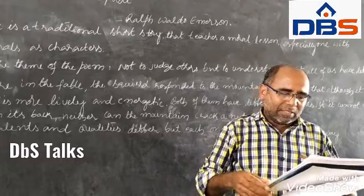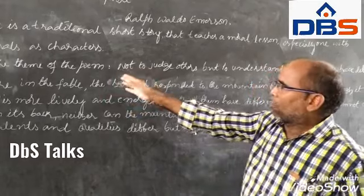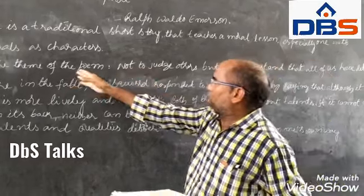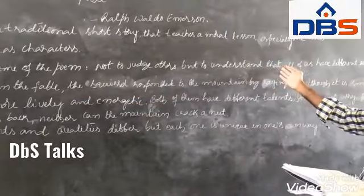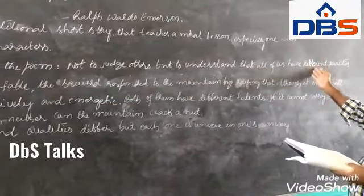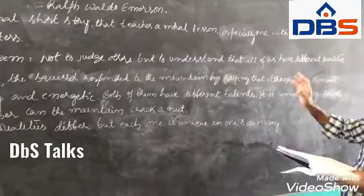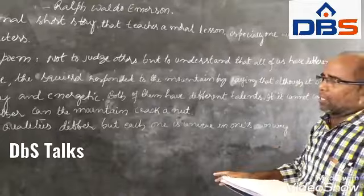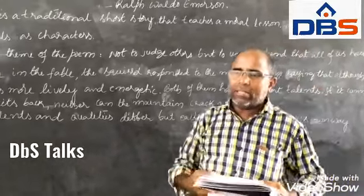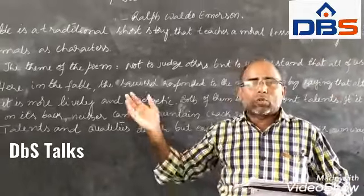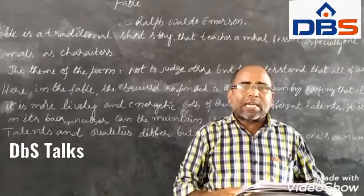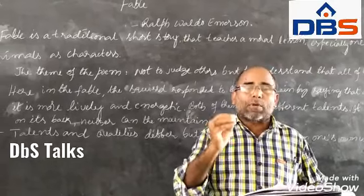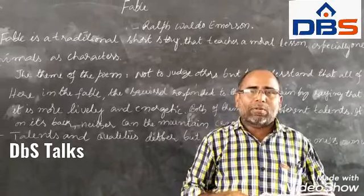The moral and theme of the poem is not to judge others, but to understand that all of us have different qualities and abilities — and each one is unique. Just go through the poem very carefully and try to understand the gist of this particular fable. Thank you.